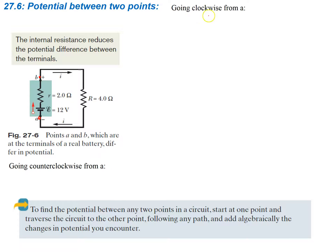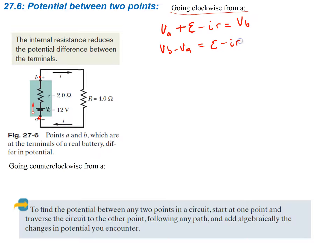If we go clockwise starting from point A and we go to point B, we can see what our voltage drop is going to be. Our voltage at A is just VA. Then we run into our EMF, which is going to be epsilon — that's going to be positive because we're going with the current. Then we run into a resistor, which is going to be negative since we're going with the current, so that's minus I times little r for our internal resistance. Then we get to our final position B, which is just our final voltage.